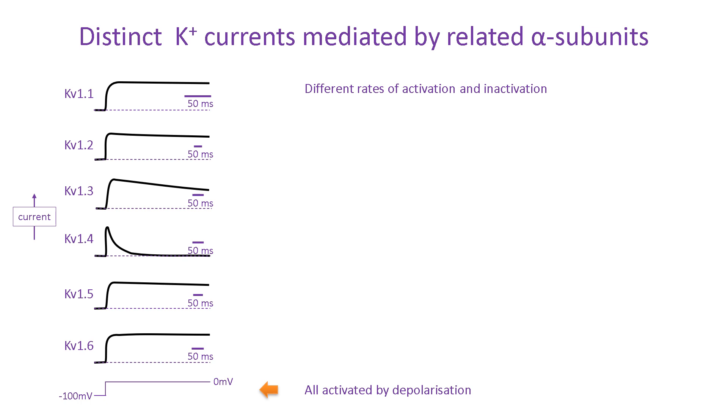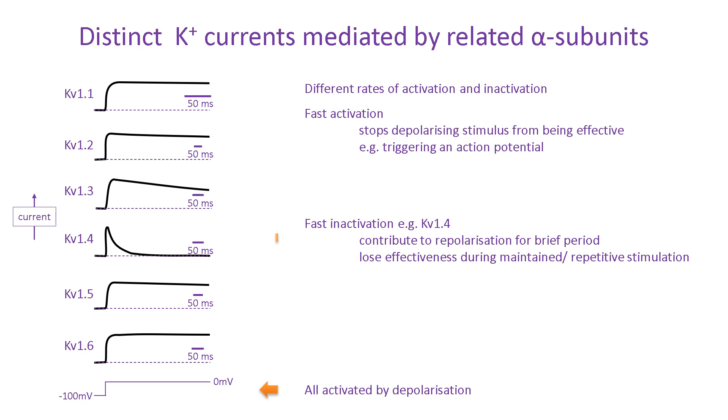The main function of potassium channels is to counteract membrane depolarization. For example, during an action potential, during repeated action potential firing, or to prevent an action potential from firing. A potassium channel that activates quickly can stop a depolarizing stimulus from reaching threshold and triggering an action potential. But, if its inactivation is fast, such as in KV1.4, it quickly loses its ability to counteract depolarization during sustained or repetitive activity. On the other hand, a slowly inactivating channel, such as KV1.1 or KV1.6, will continue to promote repolarization during periods of prolonged or repetitive stimulation. In this way, it can limit the length of a burst of action potentials.